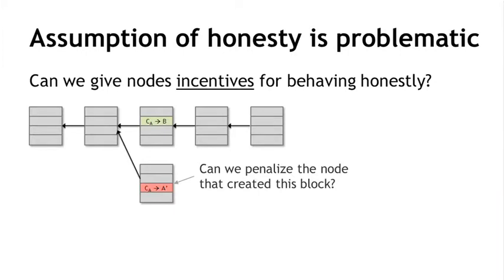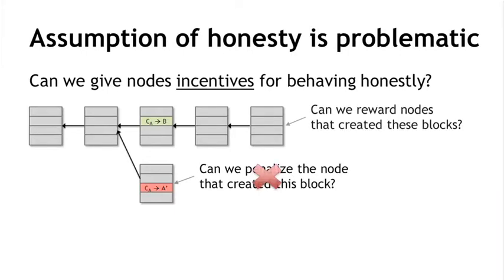So instead, let's flip the question around and ask: can we reward the nodes that created all these blocks that did end up on the long-term consensus chain? Well, again, sort of the same problem — we don't have node identities, so we can't mail them cash to their home addresses. If only there were some sort of digital currency that we could use to incentivize them, a decentralized one perhaps. You probably see where I'm getting at.